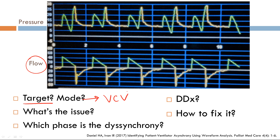So what's the issue here? Reading each scalar left to right, let's start with the pressure. The breath is triggered, so there's no issue with trigger. However, after the breath is triggered, you can see there's a negative deflection. The same is true with the second, third, and consecutive breaths. So the issue is not trigger, but it's target. A negative deflection in the pressure scalar means the patient is inspiring. As a result, this is a target dyssynchrony.